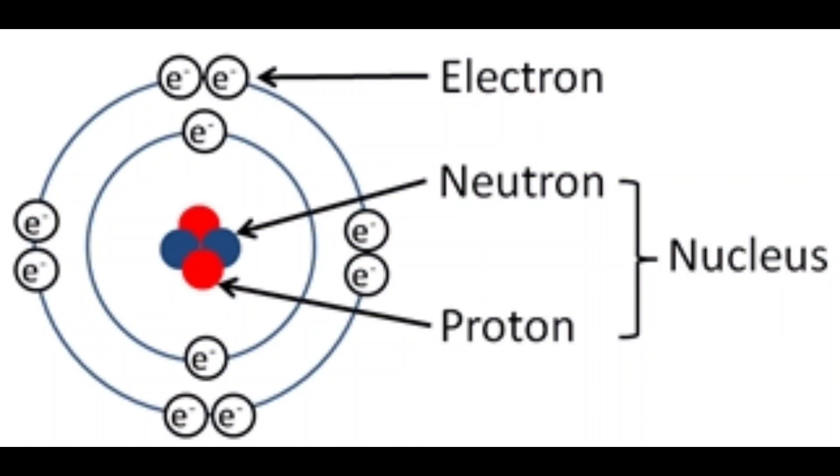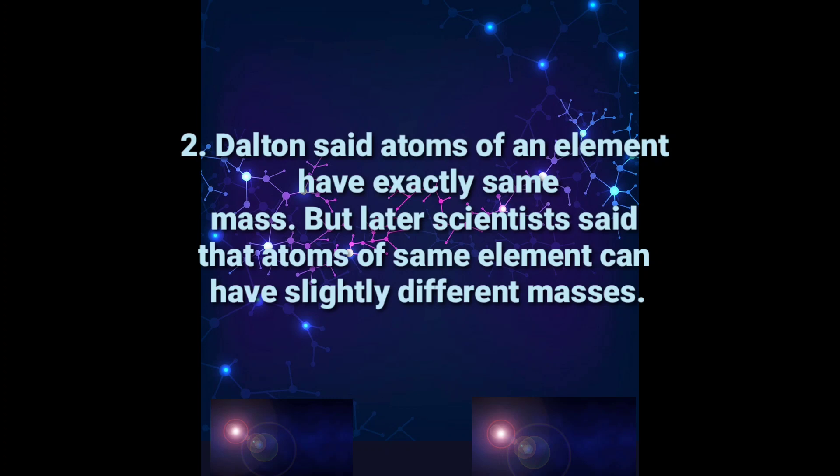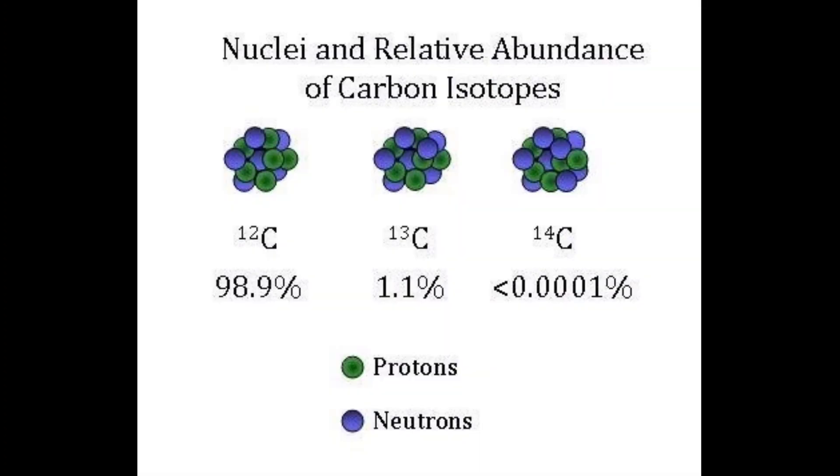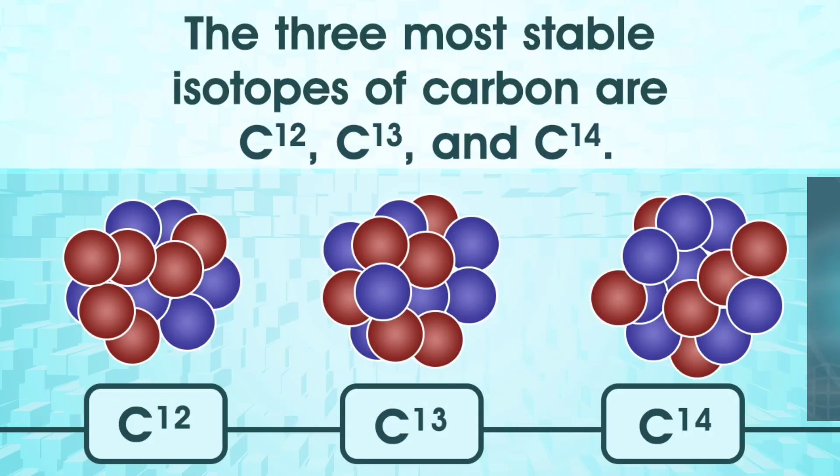Number 2. Second drawback is Dalton said atoms of an element have exactly same mass. But later scientists said that atoms of same element can have slightly different masses. For example, carbon is an element but isotopes of carbon are different: C-12, C-13, C-14.